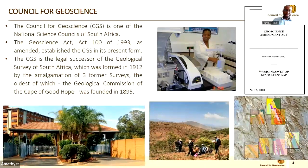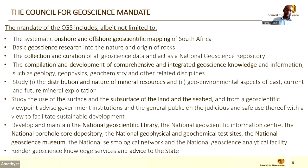The Council for Geoscience is one of the National Science Councils in South Africa, established under the Geoscience Act of 1993. It is the legal successor of the Geological Service of South Africa, which was formed in 1920 by the combination of three former surveys. The head office is in Pretoria.